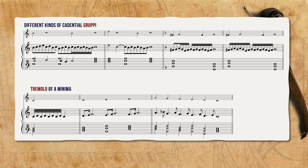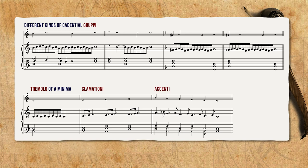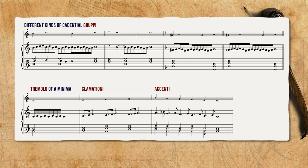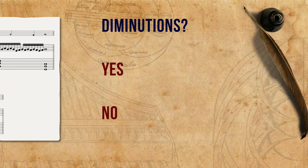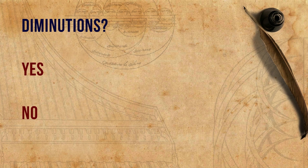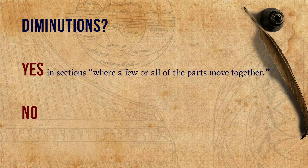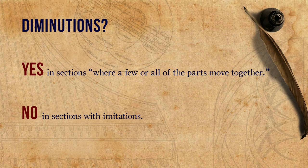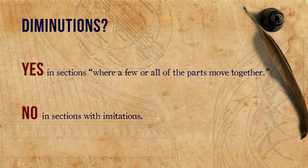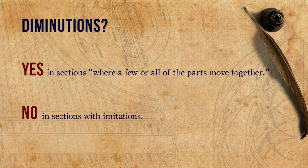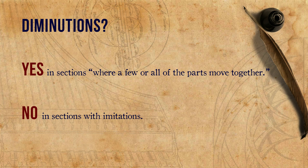The other ornaments — Gruppi, Tremoli, Clamazioni, and Accenti — are found, albeit under different names and slight variations, in several other sources from that time. Before presenting two pieces that he intabulated with diminutions, Diruta explains when diminutions are appropriate and when not. They are great, for example, in sections where a few or all of the parts move together, but are not desired in sections with imitations. However, he notes that if you do want to add diminutions on some subject which is imitated, you must add the same diminution in all the voices.